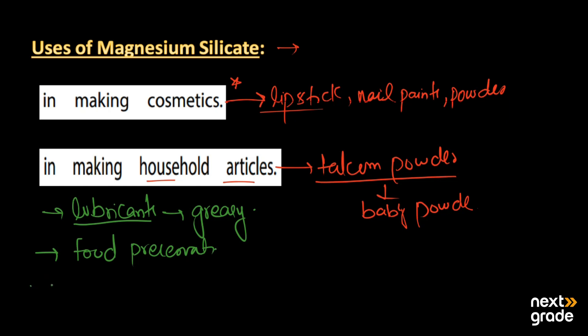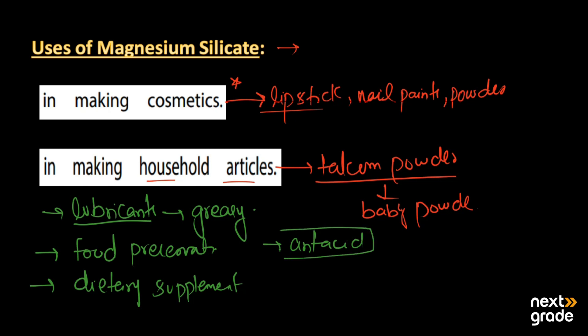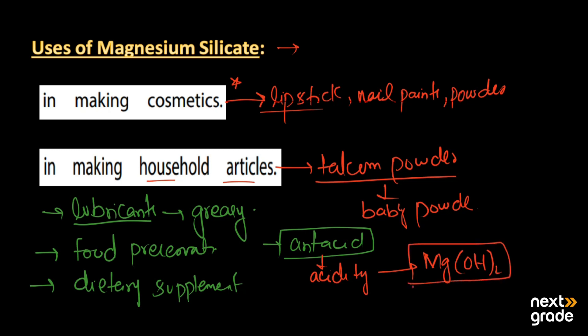Magnesium silicates are also used as dietary supplements, as they are used in our daily life on a regular basis. It is also used in the production of antacids — chemicals used to reduce the acidity of the stomach. To reduce stomach acidity, we have milk of magnesia, which has the formula of magnesium hydroxide.